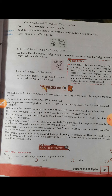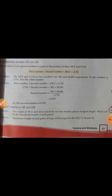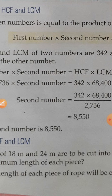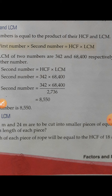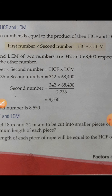In this question, we are given HCF and LCM along with the first number and need to find the second number. The formula we need to use is: first number × second number = HCF × LCM. When two numbers are given along with HCF and LCM, you apply this formula directly.